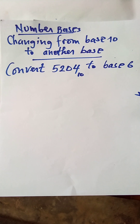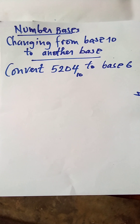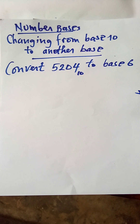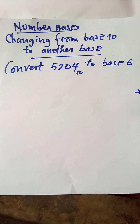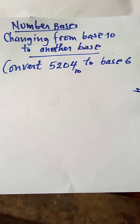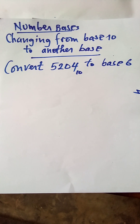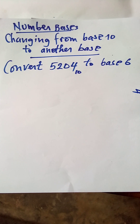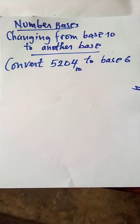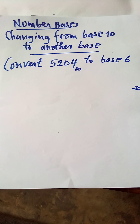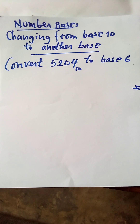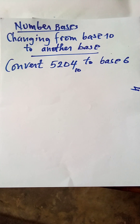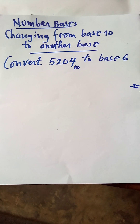We start from changing from base 10 to another base. We have one example: to convert 5,204 to base 6. The number is in base 10. What you have to know is that a number is going to have digits which are less than its base. So converting from base 10 to another base, we do what we call successive division — dividing until you get a zero as the quotient.